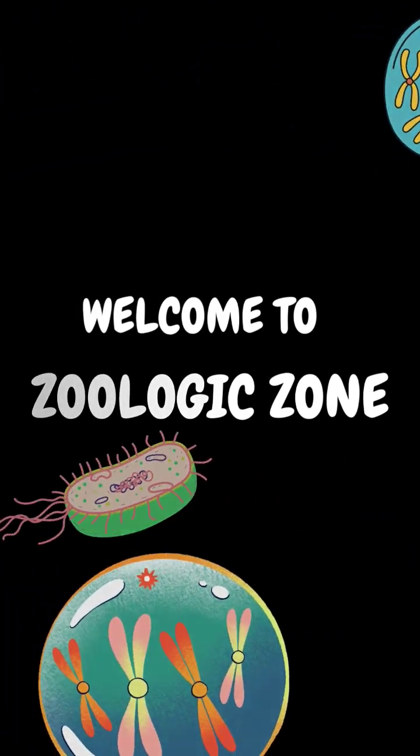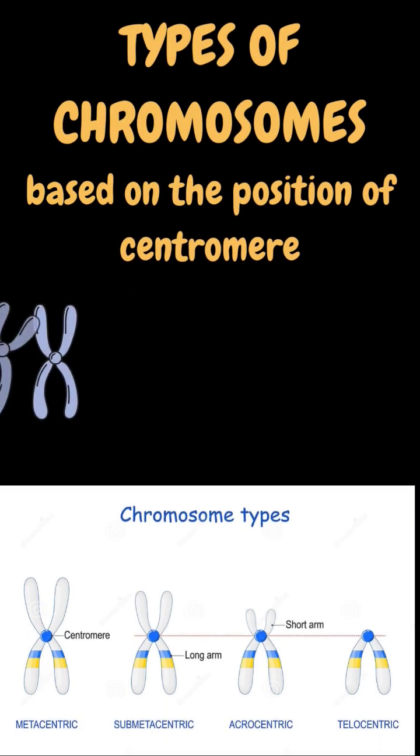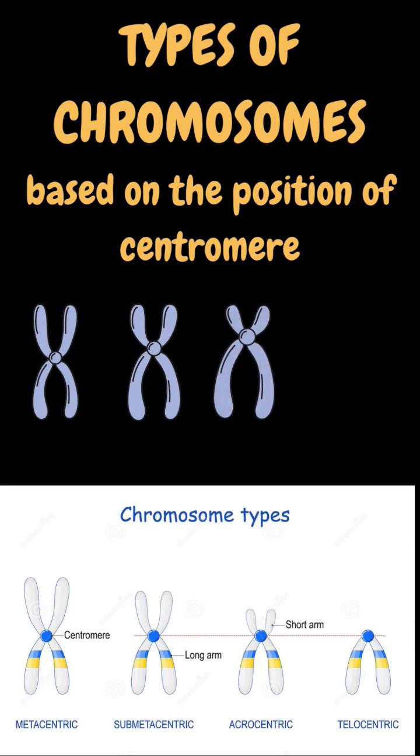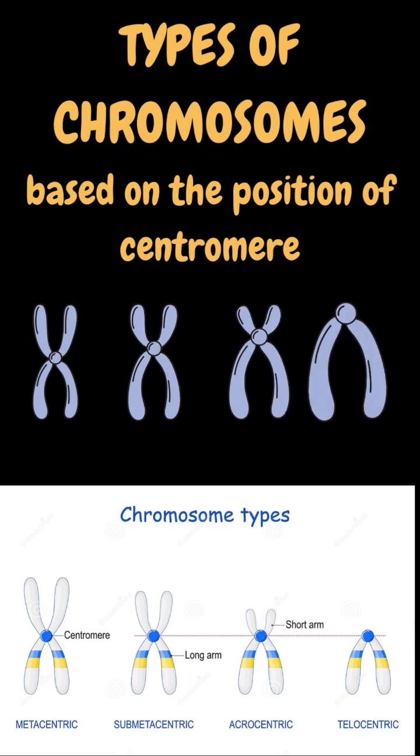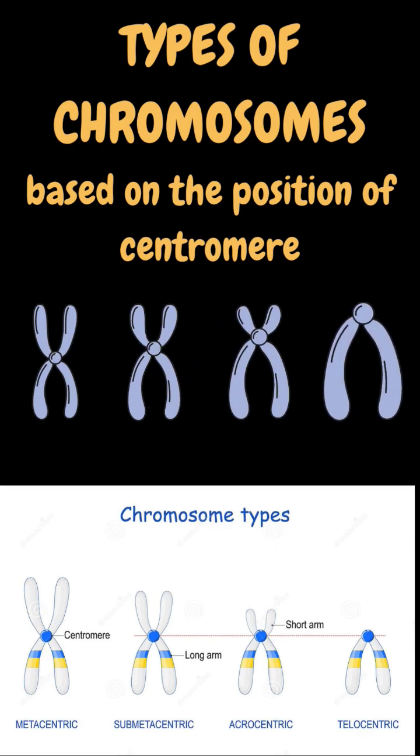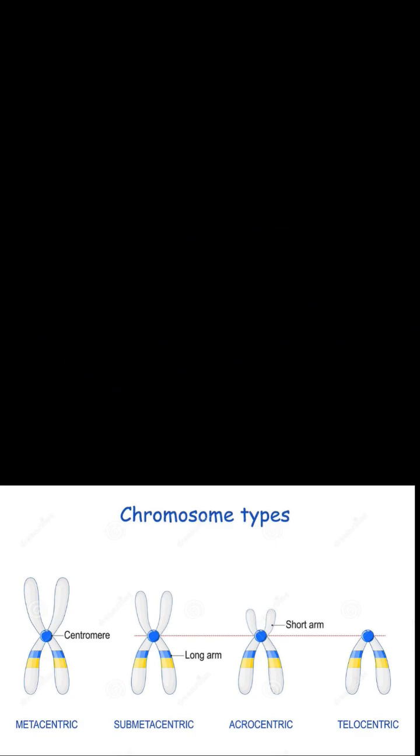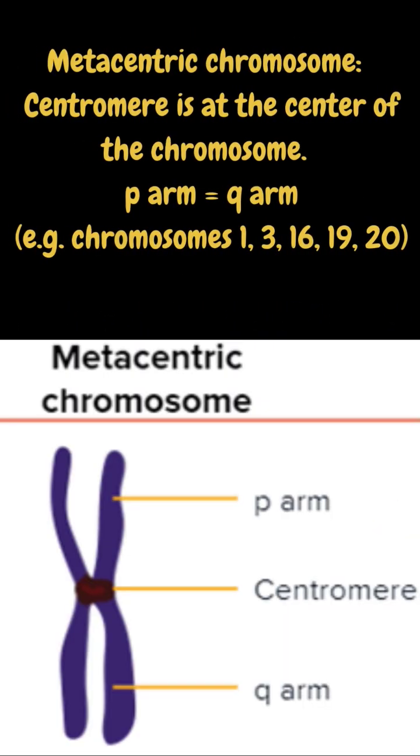Welcome to Zoologic Zone. Today's topic is Types of Chromosomes based on position of Centromere. There are majorly four types.